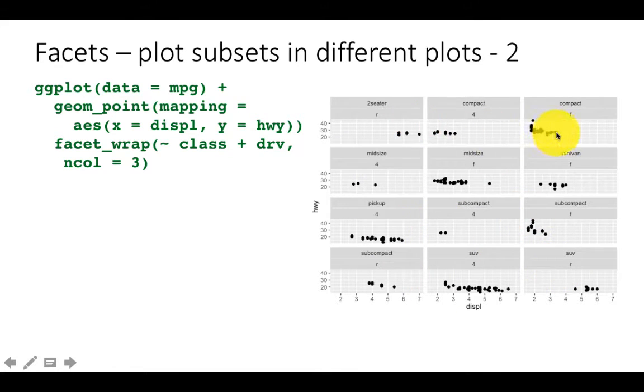So obviously there are many more plots, there are 12 plots and each plot has fewer points, which is to be expected because you are dividing the total number of points into many more plots, so you see fewer points in each plot.